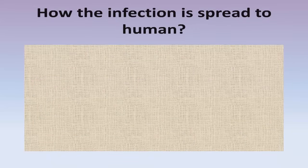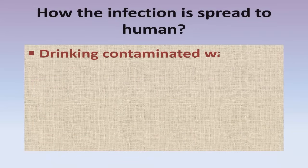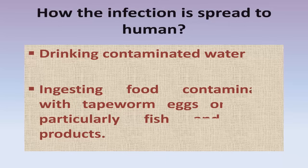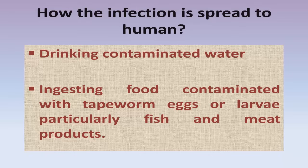How is the infection spread to humans? Number one: by drinking contaminated water. Number two: by ingesting food contaminated with tapeworm eggs or larvae, particularly fish and meat products.